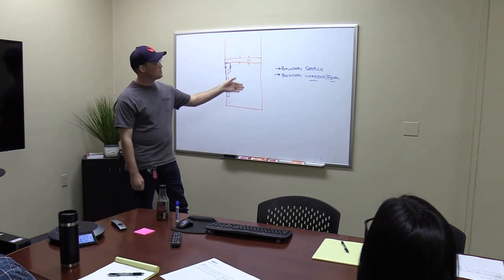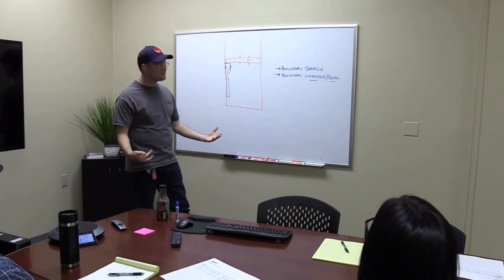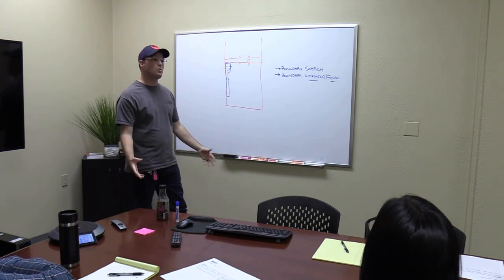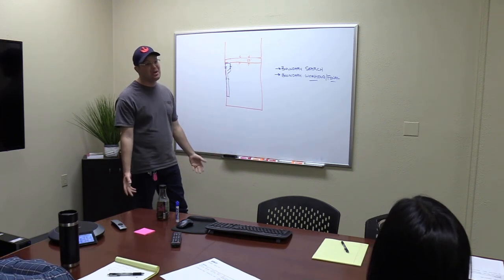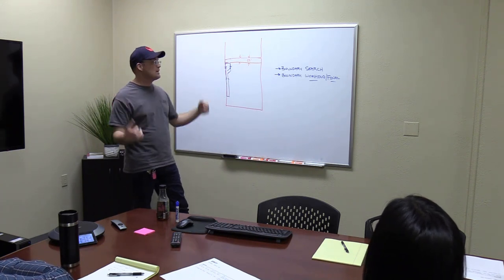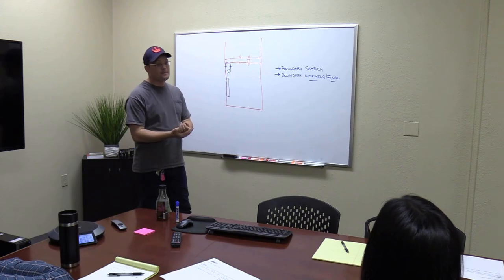I just wanted to run through the difference. Matt's asking - what's search, what's working? Usually most of the time we're going to have both of those drawings. On something really simple, we got a four-sided parcel per parcel map where everything record matches measured - you know, measured matches record - we might not necessarily need a search drawing.